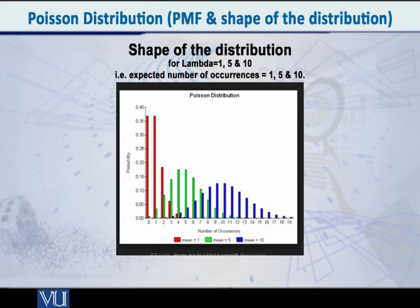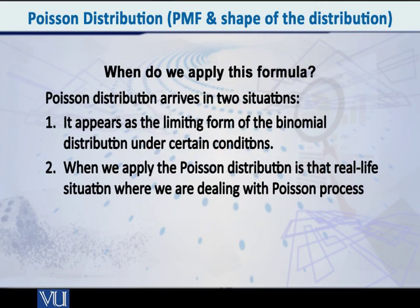The standard deviation — indicating the spread of the distribution — is equal to the square root of 2, because it has been mathematically proven that the variance equals lambda, so the standard deviation is the square root of the variance. Notice what an interesting property this is: if you are dealing with a Poisson distribution, the one lone parameter lambda represents both the mean and the variance of the distribution.